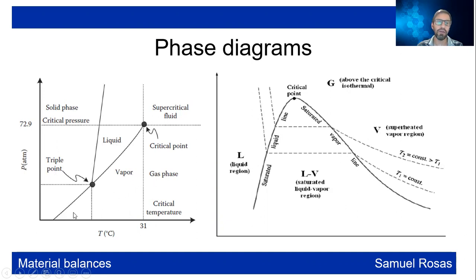Here you will have the line that divides the solid from the vapor, the line where the solid and the liquid are separated, and the vapor and the liquid are also separated by one line. The point where the three — solid, liquid, and vapor — coexist is called the triple point.